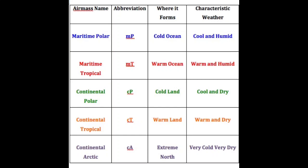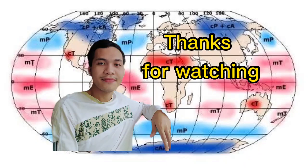As a summary, we have this table. In the first column we have the air mass name, in the second the abbreviation, in the third where it forms, and in the last column the characteristic weather. Maritime Polar forms in cold ocean and is cool and humid. Maritime Tropical forms in warm ocean and is warm and humid. Continental Polar forms in cold land and is cool and dry. Continental Tropical forms in warm land and is warm and dry. Continental Arctic forms in the extreme north and is very cold and very dry. Thank you for watching.